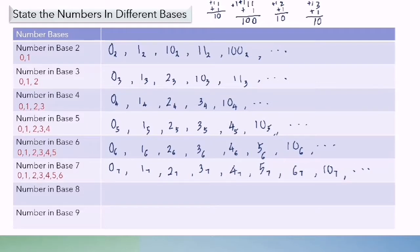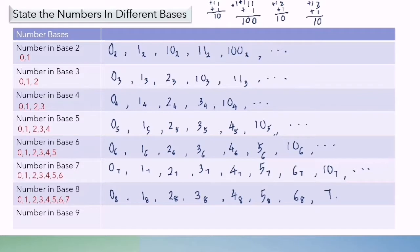Number in base 8: we have the numbers 0 to 7. We use the same method to write, only the base we change to base 8. So after 7 base 8, we have 1, 0 base 8, and so on.